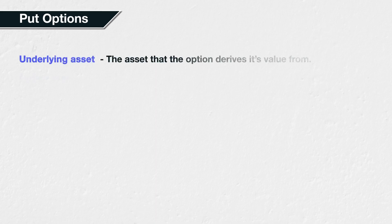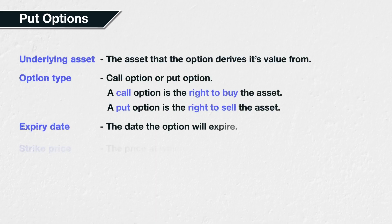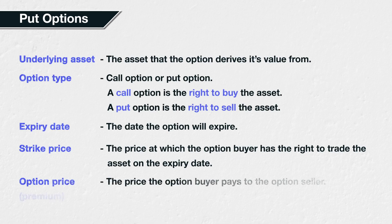As we covered in lecture 2.2, an option has five main parameters: the underlying asset, the option type, the expiry date, the strike price, and the option price.